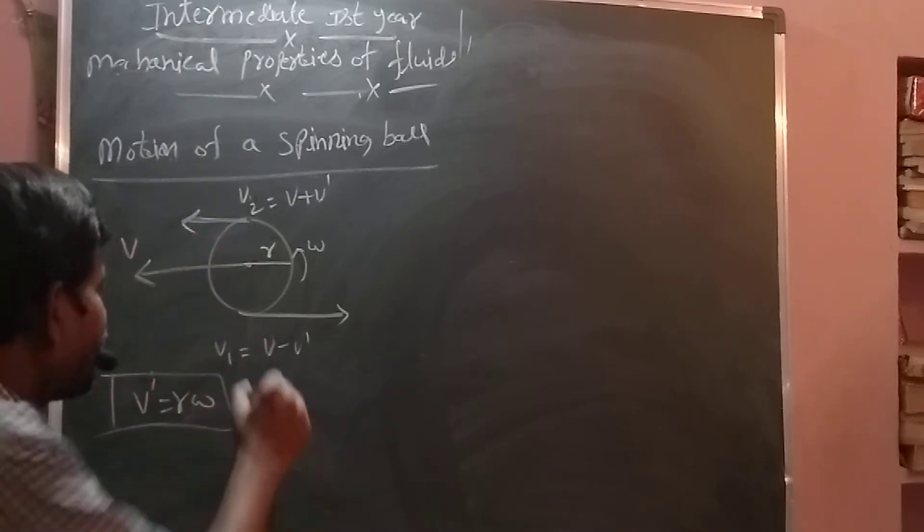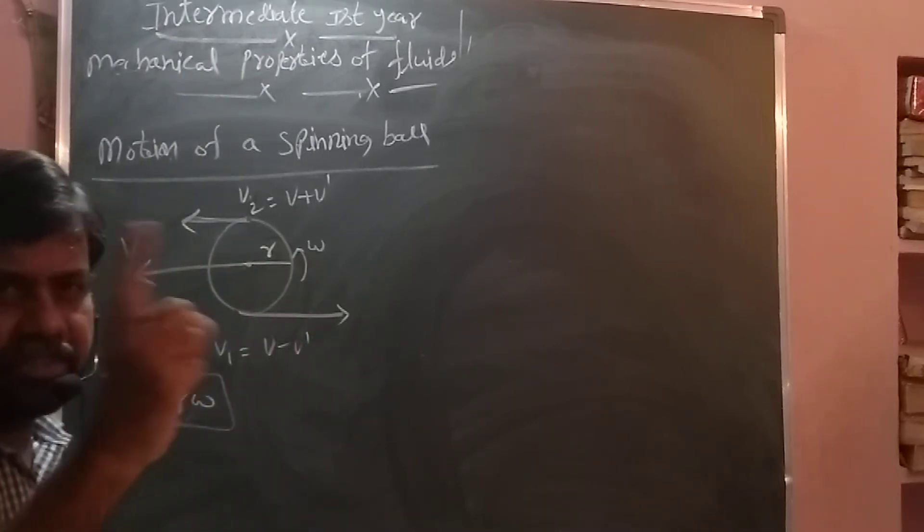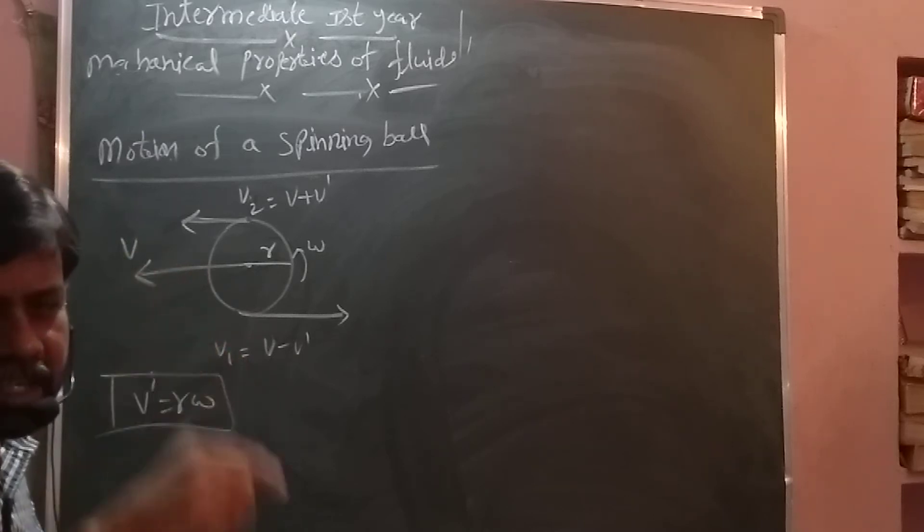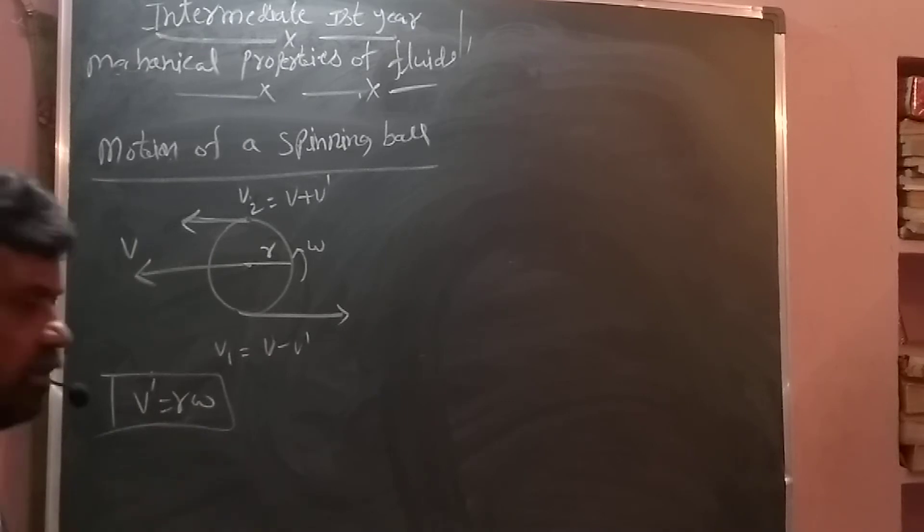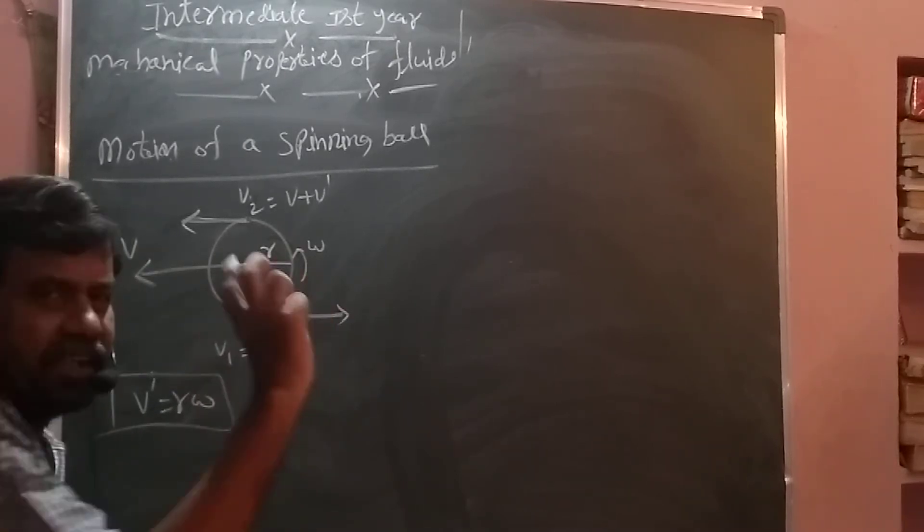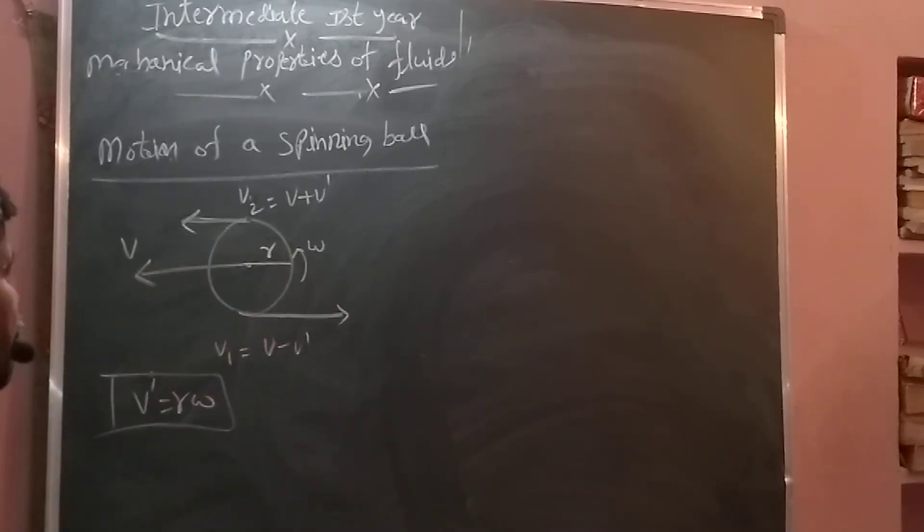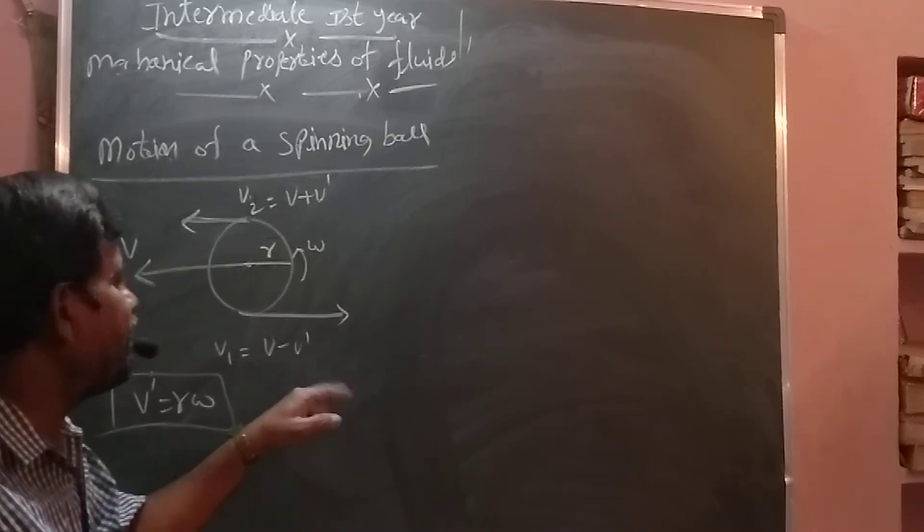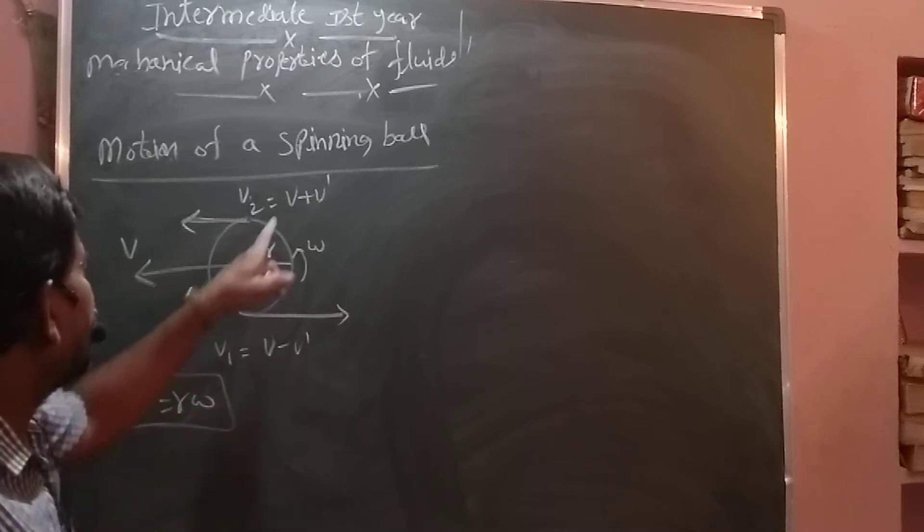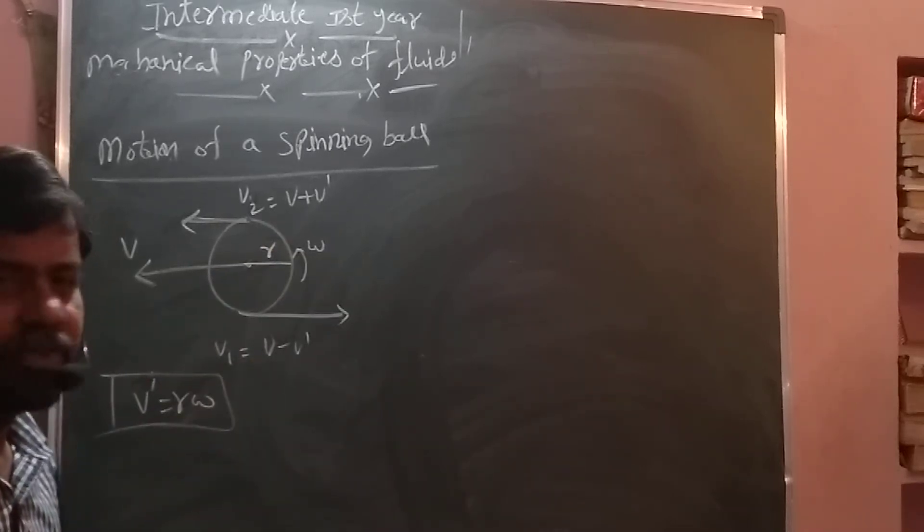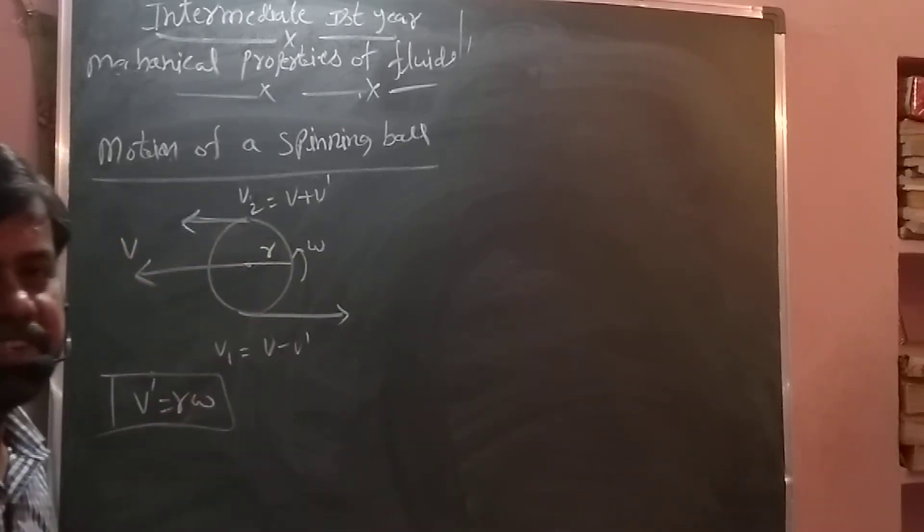So if R is the radius of the ball, if it is rotating with omega angular velocity, it is forcing some V dash velocity. What is the V dash velocity? R omega. R is the radius of the ball and omega is the angular velocity. So due to that, in the downward, V minus V dash is creating, there is a net velocity. In the top, V plus V dash creating. So velocities variation came.